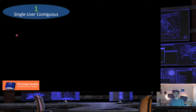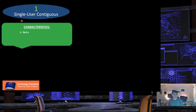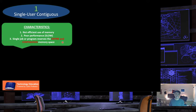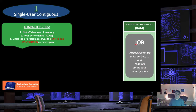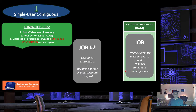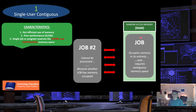The first early memory management system is single user contiguous. Its characteristics include not efficient use of memory space, poor performance being really slow, and a single job or program reserving the entire contiguous memory space. Looking at a RAM block, one single job occupies the entire memory space. If a second job wants to use memory, the request is rejected because job number one is utilizing the entire memory space.